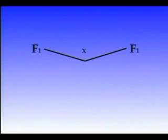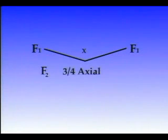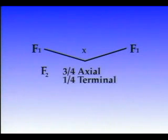Of the plants of the F2, or second filial, generation, three quarters produced axial flowers and one quarter produced terminal flowers. The factor for terminal flowers had come back.